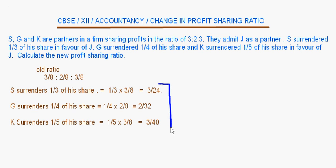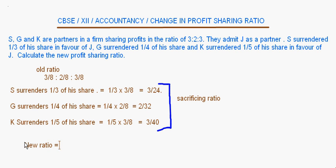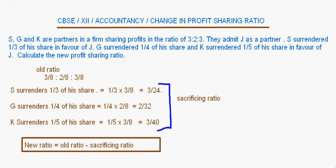So 3/24, 2/32 and 3/40 — these are the amounts they are surrendering, so this is their sacrificing ratio. They are sacrificing this from their shares. Now we have found out how much each partner is sacrificing in favor of the new partner. The new ratio will be equal to the old ratio minus the sacrificing ratio.